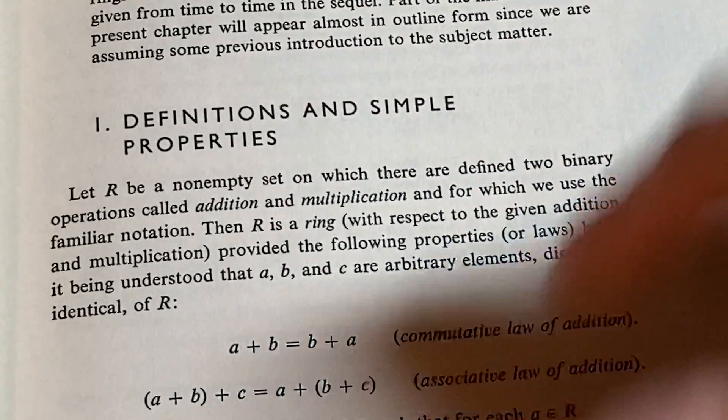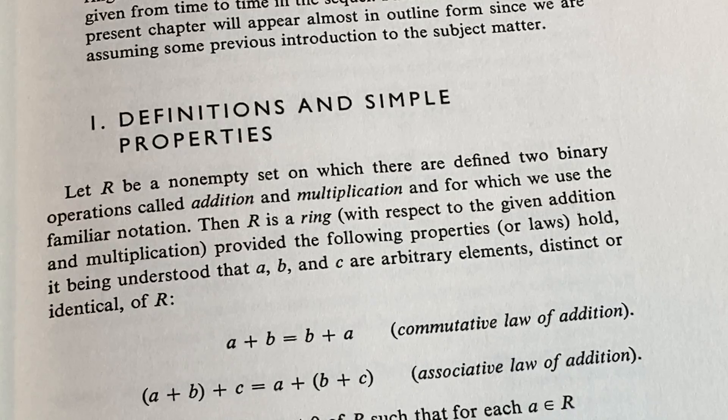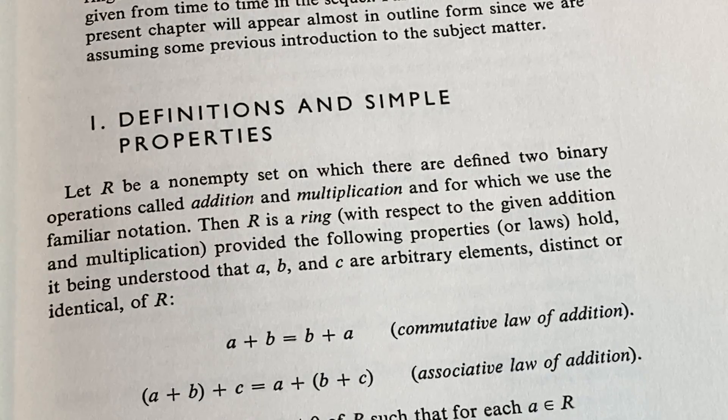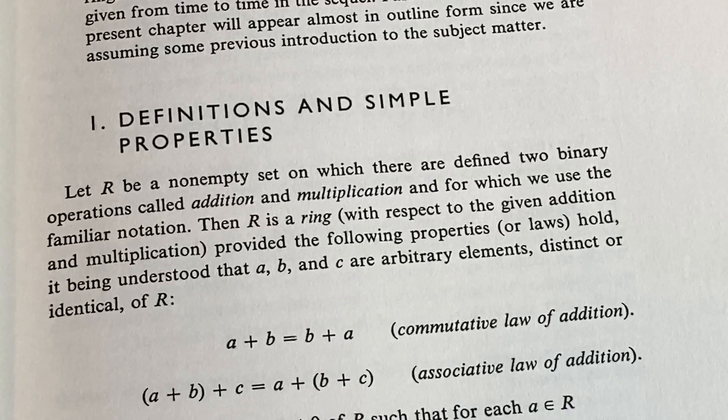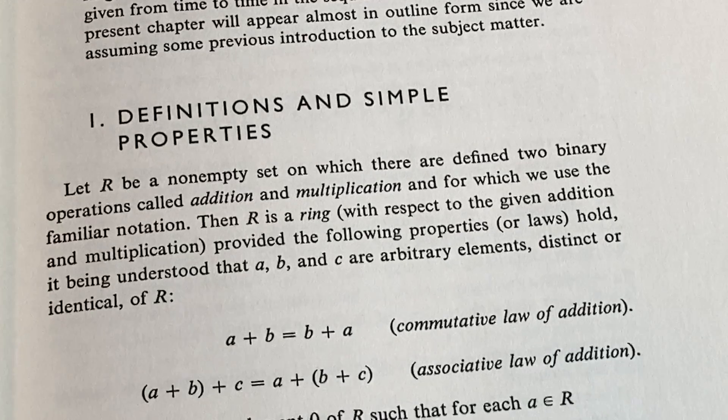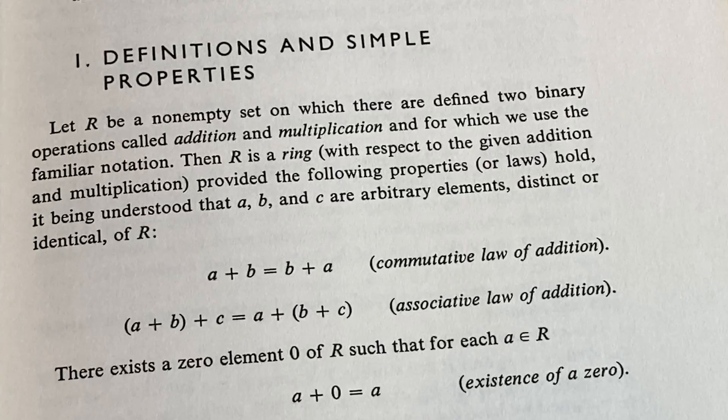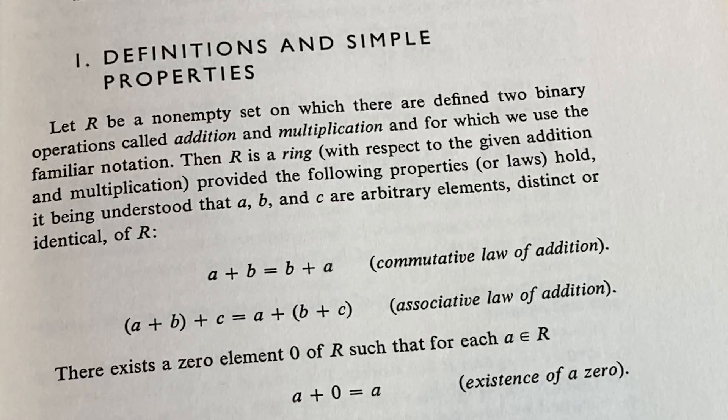And then here it talks more about rings. So let R be a nonempty set on which there are defined two binary operations called addition and multiplication, and for which we use the familiar notation, right? So plus and times, and R is a ring, provided the following properties hold.